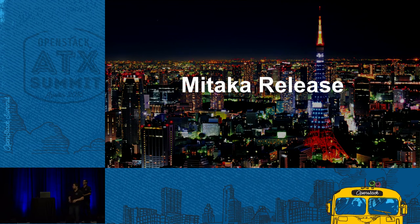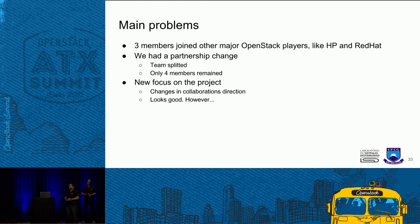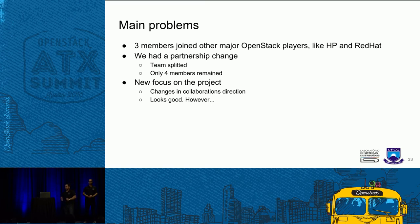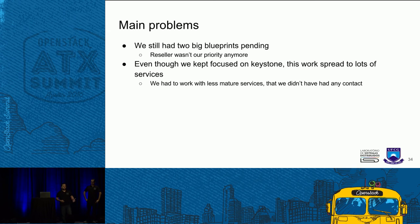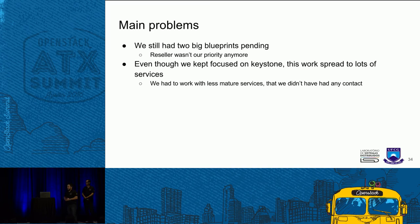Coming to the Mitaka release, we had more problems to solve. Three members of our team left to other OpenStack players such as HP and Red Hat. We had a partnership change which gave our contributions a little bit of redirection, and we had a new focus on our project. However, we still had two big blueprints pending — the biggest was Reseller. With the change of focus, it wasn't our priority anymore. Even though we kept focused on Keystone and this new direction, we also spread our work to other services. But this was more specialized work — in other services we were still doing authentication, which was our specialty.